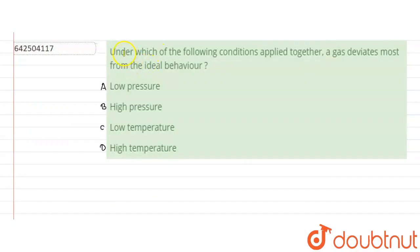Okay, so hello everyone. Now this question says that under which of the following conditions applied together, a gas deviates most from its ideal behavior.